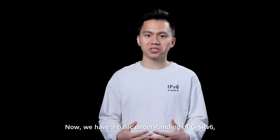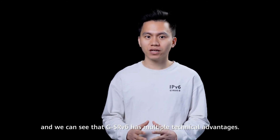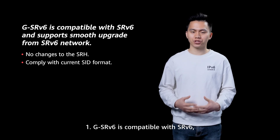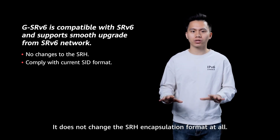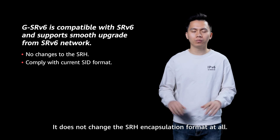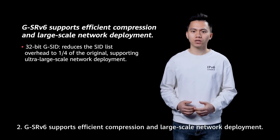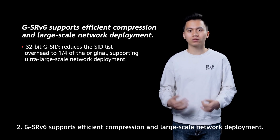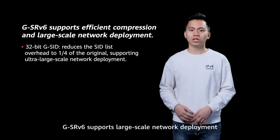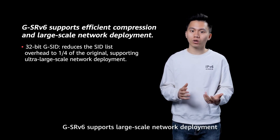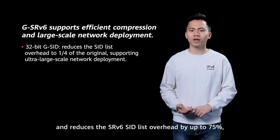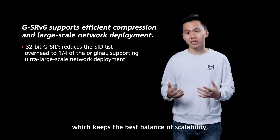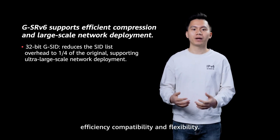Now we have a basic understanding of GSRV6, and we can see that it has multiple technical advantages. First of all, GSRV6 is compatible with SRV6 — it supports smooth upgrades from SRV6 to GSRV6 and does not change the SRH encapsulation format at all. Secondly, GSRV6 supports efficient compression and large-scale network deployment. Using 32-bit C-SID, GSRV6 reduces SRV6 segment list overhead by up to 75%, keeping the best balance of scalability, efficiency, compatibility and flexibility.